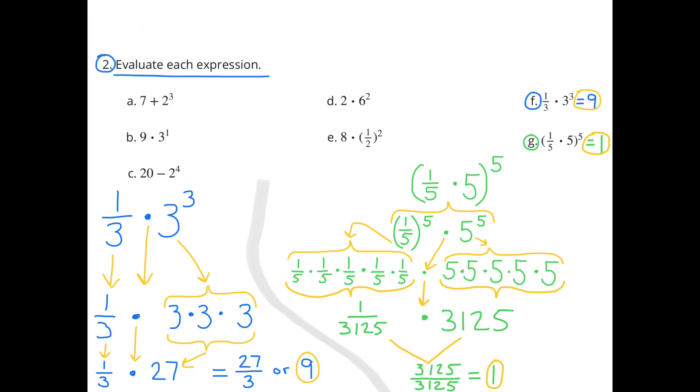F, 1 third times 3 to the third power is 1 third times 3 times 3 times 3. And 3 times 3 times 3 is 27. So 1 third times 27 equals 27 thirds, or 9.